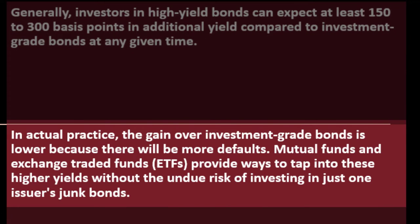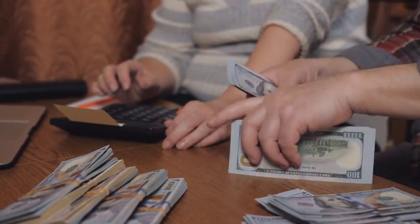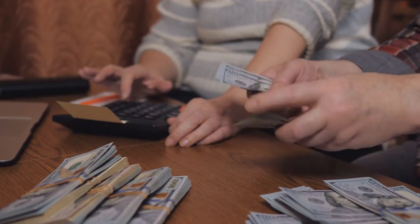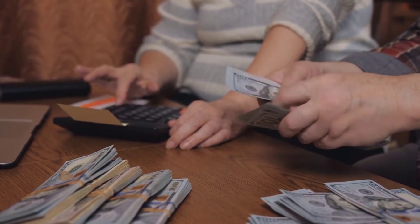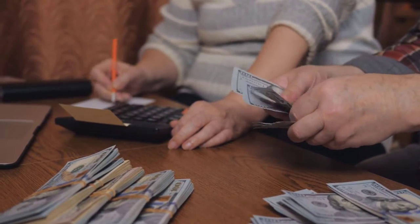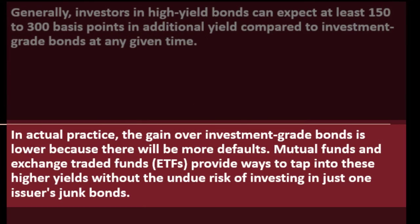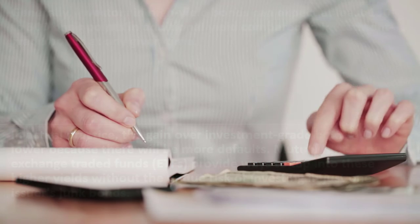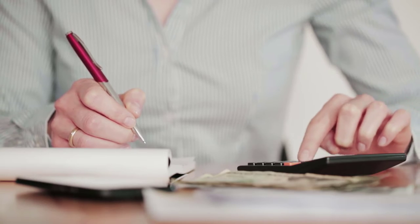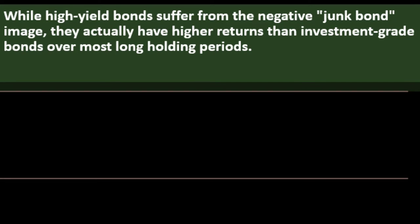In actual practice, the gain over investment grade bonds is somewhat offset because there will be more defaults. Mutual funds and exchange-traded funds (ETFs) provide ways to tap into higher yields without the undue risk of investing in a single issuer's junk bonds. By pooling funds and investing across various junk bonds, you gain diversification within the high yield class, which can be a useful component of an overall investment strategy.